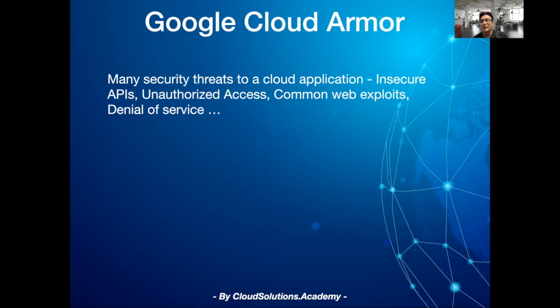For an application, there can be many security threats — for instance, insecure APIs, APIs exposing sensitive information, wrong privileges provided on the servers that allows unauthorized access, and common web exploits like cross-site scripting and denial of service carried out by automated bots, which tries to bring down or make your application unresponsive.